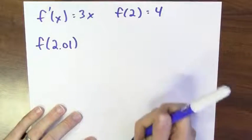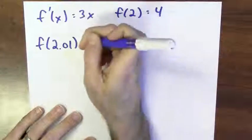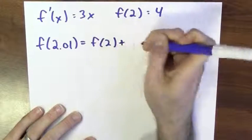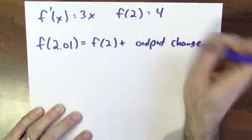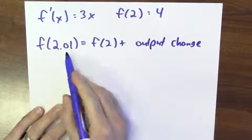Yes, I can, right? f of 2.01, well, that's f of 2 plus how much the output changes when I go from 2 to 2.01.